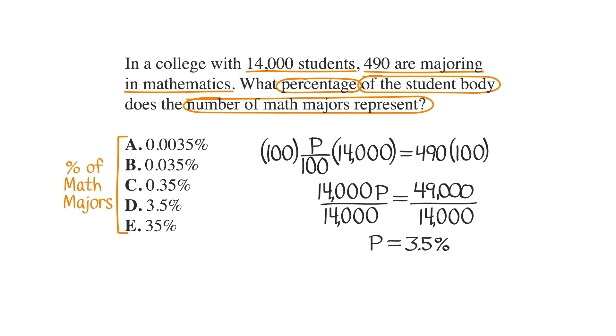The P represents the what in the question. So the answer to the question, what percentage is 3.5% or a little thing we like to call choice D.